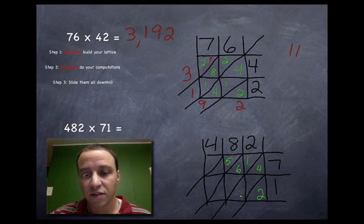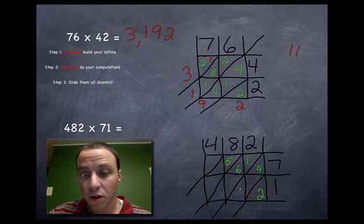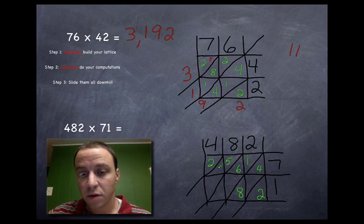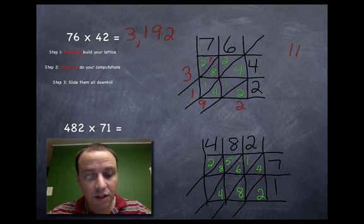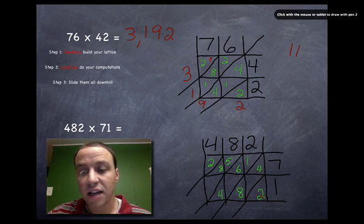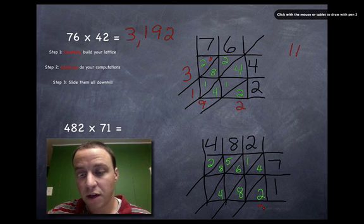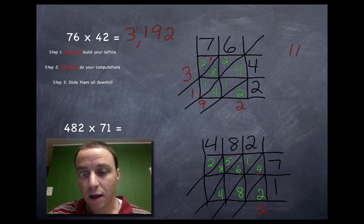I know eight times five is forty, plus sixteen is fifty-six. I always had a hard time with my sixes, sevens, and eights. And then eight times one is eight. Four times seven, we did that one in the previous problem: twenty-eight. And four times one is four. Carefully done all of my computations. Now let's slide these guys downhill.